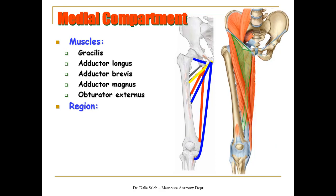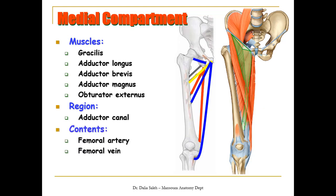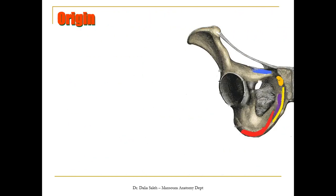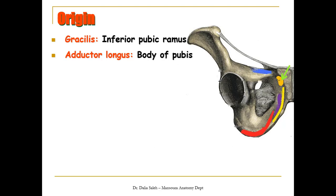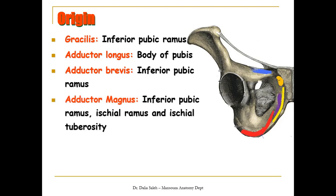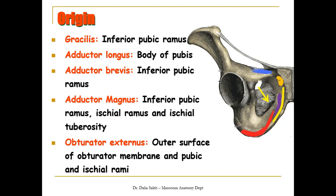The adductor canal is found in the medial compartment of the thigh. For the origin of the adductor muscles: they take origin from the body of the pubis together with the ischiopubic ramus. The gracilis takes origin from the inferior pubic ramus. The adductor longus arises near the body of the pubis. The adductor brevis also from the inferior pubic ramus but at a deeper plane than the gracilis. The adductor magnus from the inferior pubic ramus, the ischial ramus, and the ischial tuberosity. The obturator externus covers the outer surface of the obturator membrane and also arises from the pubic and ischial rami.